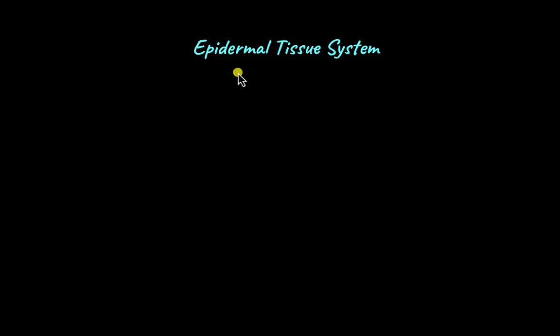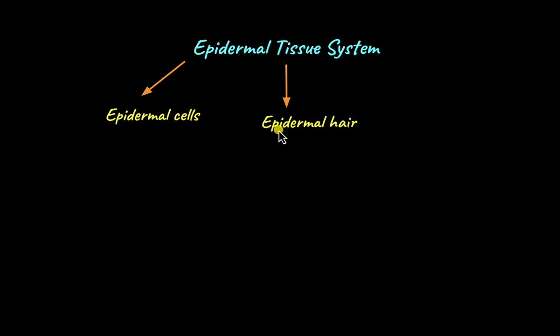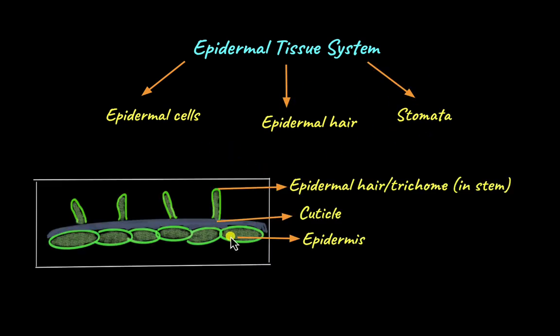The epidermal tissue system shares its name with our own skin — the outer layer of our skin is also called the epidermis. The epidermal tissue system is made up of epidermal cells, epidermal hair, and stomata. The epidermal cells that make up the epidermis are elongated parenchymatous cells located quite close to each other with no intercellular space. The main function of the epidermis is to offer protection from external factors.